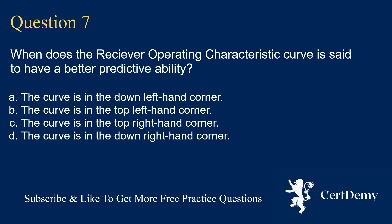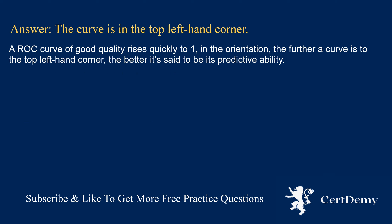Question 7. Which of the below is not subjected to passive activity rules? Options: C-corporations; S-corporations; personal service corporations; estates and trusts. The answer is: the curve is in the top left-hand corner. A ROC curve of good quality rises quickly to 1; the further a curve is to the top left-hand corner, the better its predictive ability.